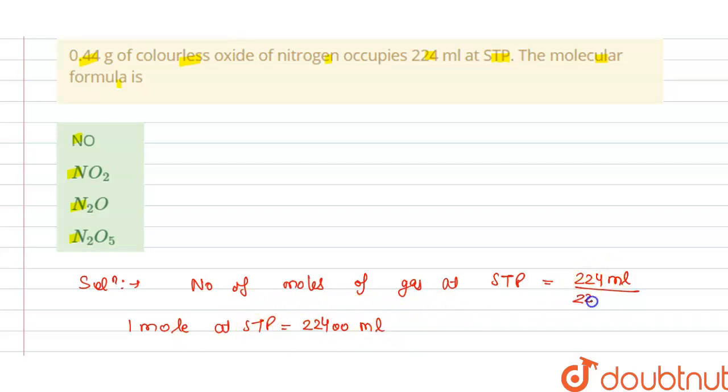So this is divided by 22400 ml, so this will become 0.01 mole.